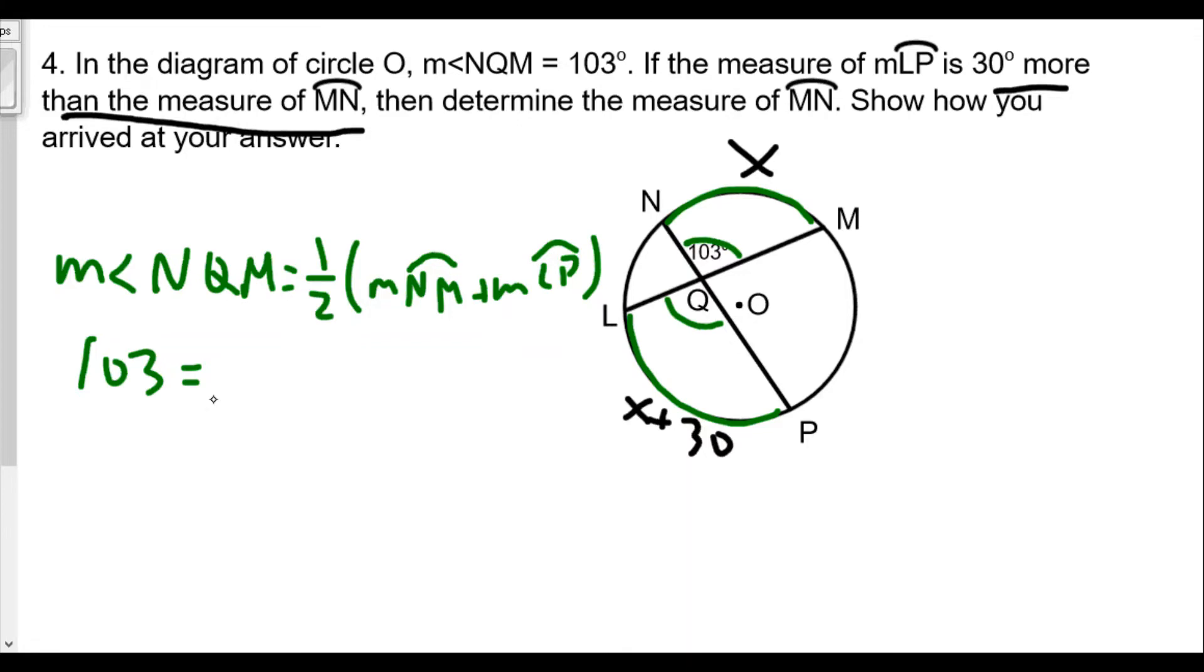I recommend writing out the formula and just filling in the information. Arc NM we don't know, we call it x, but arc LP is x plus 30. We combine that to get 103 equals one half times (2x plus 30).